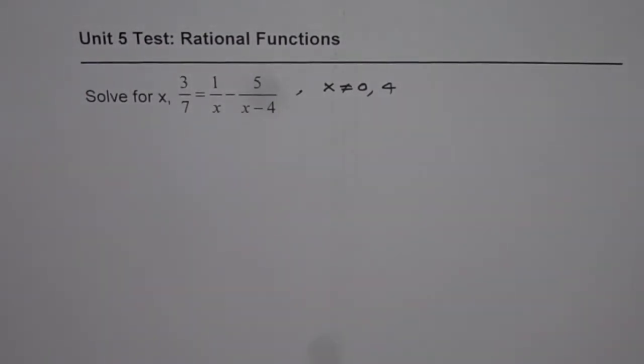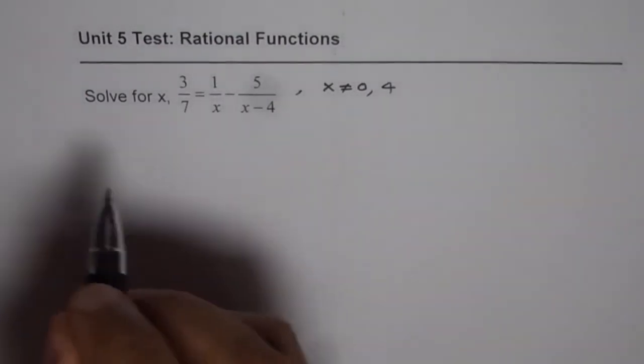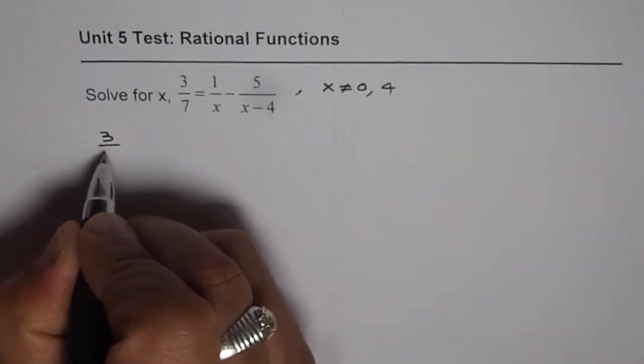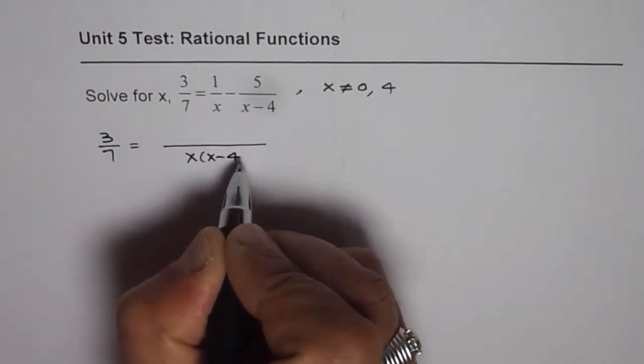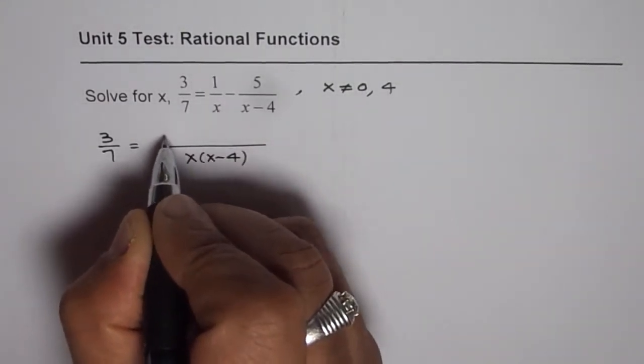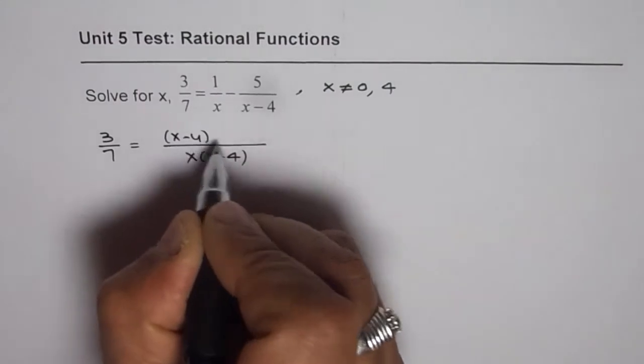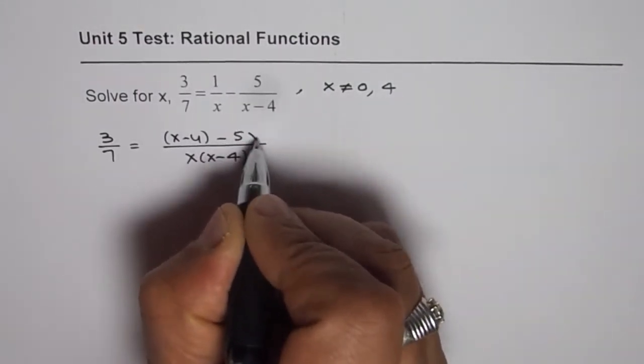Now let us see how to solve it. We can take common denominator on the right side, which is x times x minus 4. The numerator will be 1 times x minus 4 minus 5x.